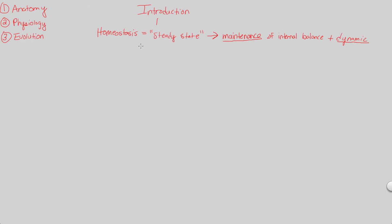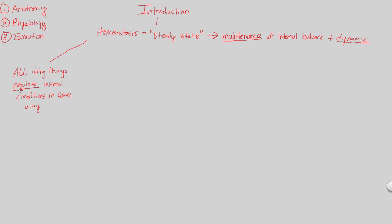Whenever we look at homeostasis, we have to understand something very critical: all living things, however complex or however simple — this is why this is the first anatomy and physiology topic we're talking about — all living things do something called regulate. That's another big word in homeostasis. All living things regulate their internal conditions in some way. We are separated from our external environment because we have internal structures, and those internal structures have internal conditions that need to be regulated. How do we regulate them? That's all going to be through homeostasis.